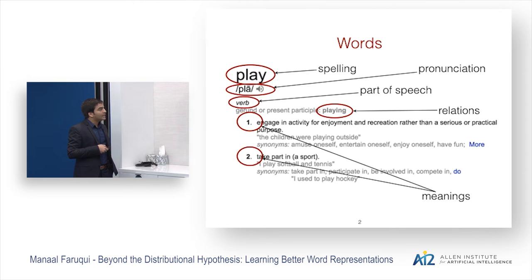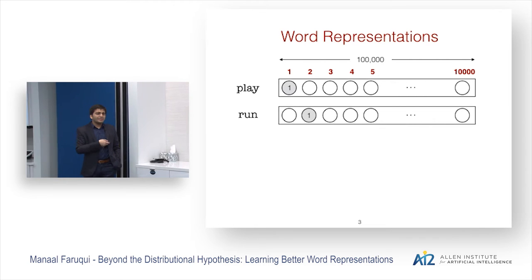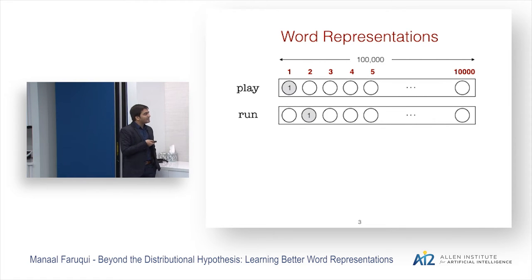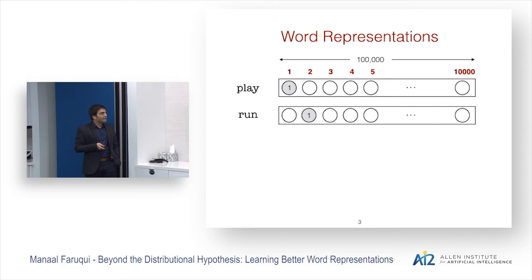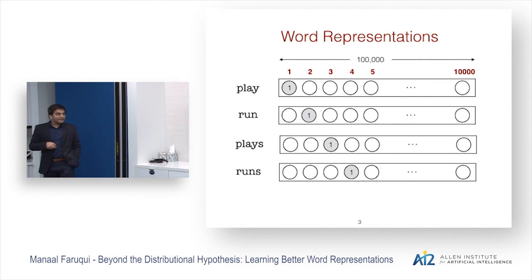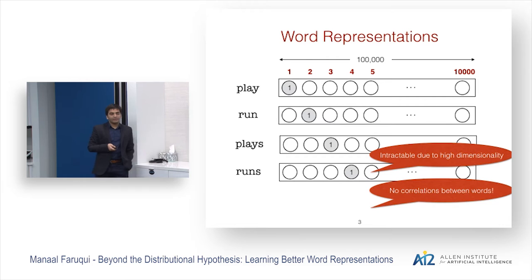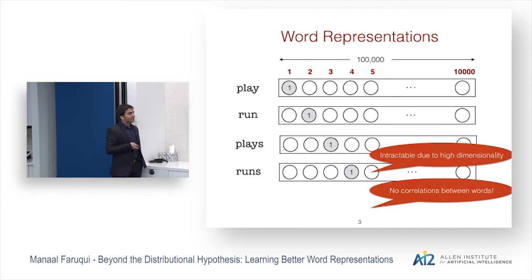To give the computer something it can process, people have discovered word representations, where you take a word and represent it in terms of numbers. For example, if you have a hundred thousand words in your vocabulary, you can represent a word by just one index in that vocabulary and the rest of the elements are zero. The problem is that there is absolutely no correlation between the meanings of these words, and it's also intractable because it's really high dimensional.